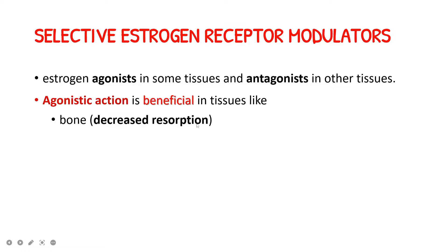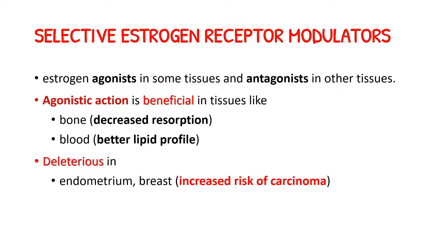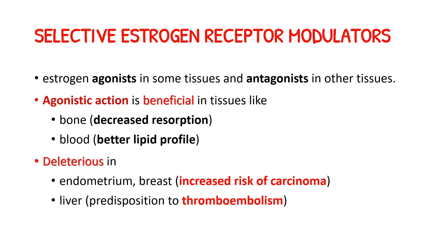The agonistic action can have a beneficial effect in some tissues: in the bone it will decrease bone resorption; in the blood it will improve the lipid profile by increasing HDL levels and decreasing LDL levels. There is also a harmful effect due to estrogen agonistic activity in the endometrium and breast, where it increases the risk of endometrial carcinoma and breast carcinoma. In the liver, it predisposes the patient to thromboembolism.